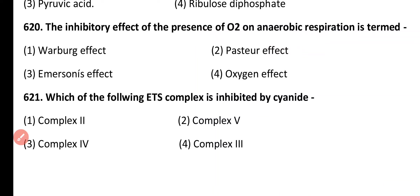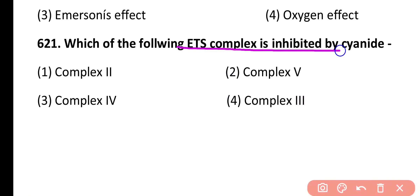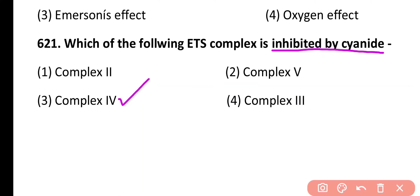Question 621. Which of the following electron transport system complex is inhibited by cyanide? Complex 2, complex 5, complex 4, complex 3. Correct answer is option 3. Complex 4, which is cytochrome C oxidase, is inhibited by cyanide poison.